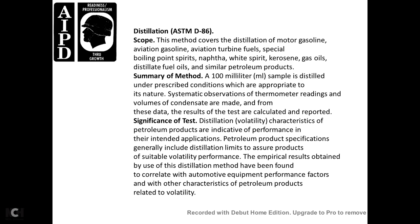Distillation — ASTM D86. Covers distillation of motor gasoline, aviation gasoline, aviation turbine fuel, special boiling-point spirits, naphtha, white spirit, kerosene, gas oils, distillate fuel oils, and similar petroleum products. Summary: a 100 mL sample is distillated under prescribed conditions; thermometer readings and volumes of condensate are recorded, and results are calculated. Significance: distillation volatility characteristics of petroleum products are indicated by the performance intended for the application. Specifications generally include distillation limits to ensure suitable volatility performance.